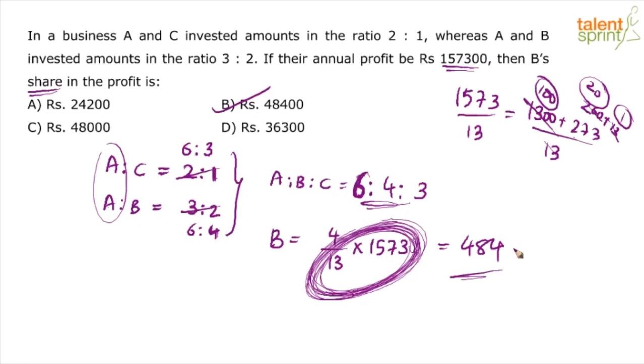Are you able to follow? There is one more way of doing it. If at all you want to eliminate some options, you may not get the exact answer. But when you look at 4 by 13, 4 by 13 is like one third. B has got 4 parts out of total 13 parts. So, 4 out of 13 is like one third of the value.